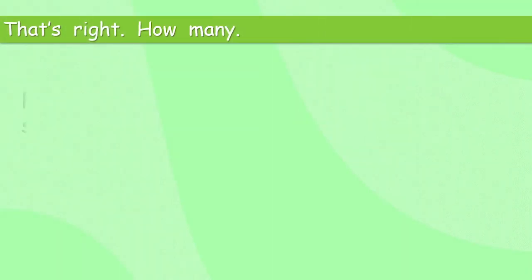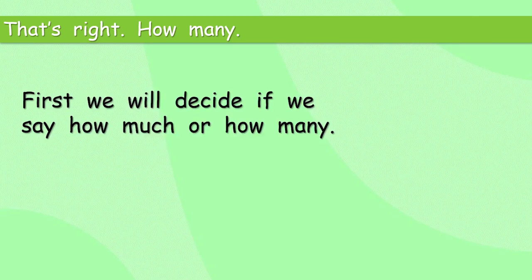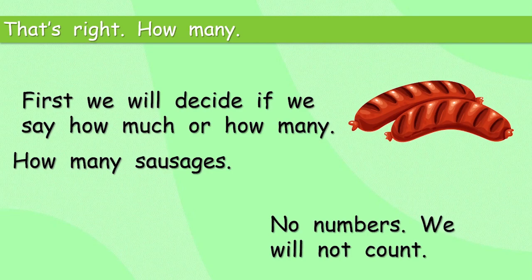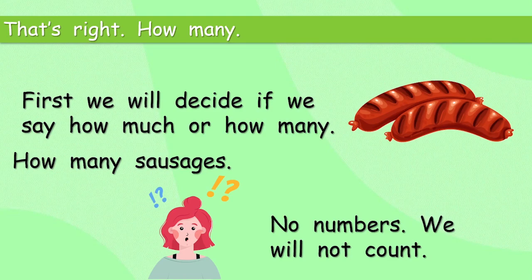Okay, how many? First, we will decide if we say 'how much' or 'how many'. So, sausages — how many? How many sausages? No numbers — we will not count. Well, this week we're going to talk a little bit about countable and uncountable. We can count sausages — one, two. That's why we say 'how many'. If we can count something, we say 'how many', but we're not going to use numbers this week.